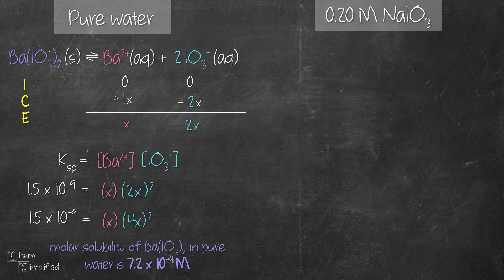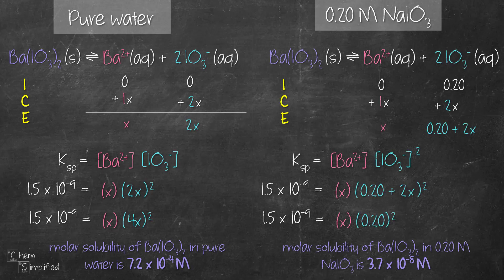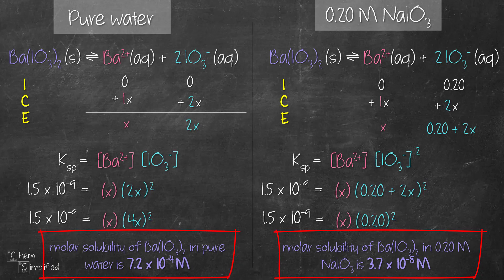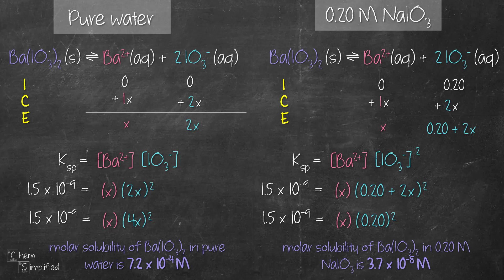I've done a video calculating the molar solubility of barium iodate in pure water — the link is in the description. I've summarized it on the left-hand side for comparison with what we just calculated on the right. In pure water, the molar solubility is 7.2 × 10⁻⁴ molar, whereas in 0.20 molar sodium iodate it's 3.7 × 10⁻⁸ molar. Since 7.2 × 10⁻⁴ is larger than 3.7 × 10⁻⁸, the presence of the common ion — iodate ion — actually reduces the molar solubility of barium iodate.